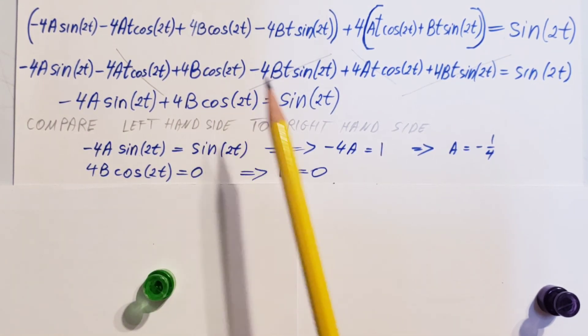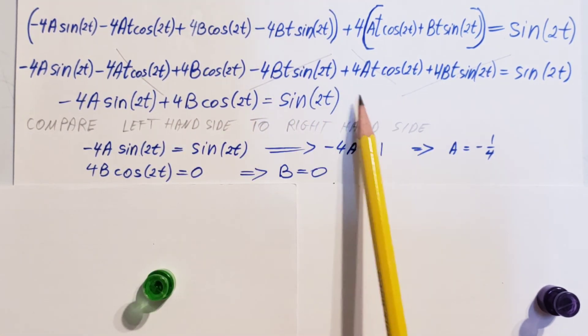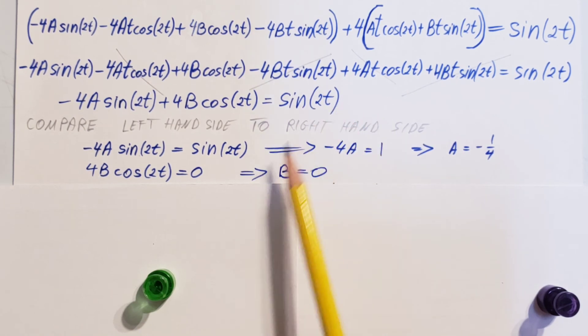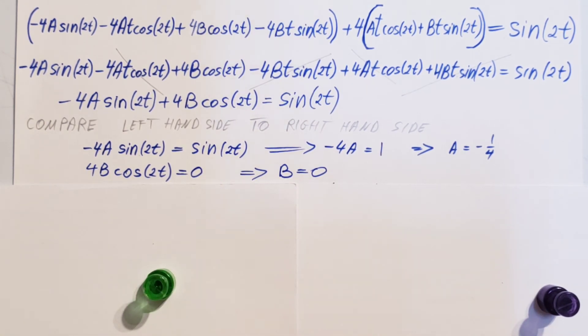Same thing. Let's compare the cosines on both sides. We have 4b cosine 2t. And here, we have a cosine here too. It's just its coefficient is a big fat zero. Okay. So, therefore, 4b cosine 2t equals zero. Our b is zero.